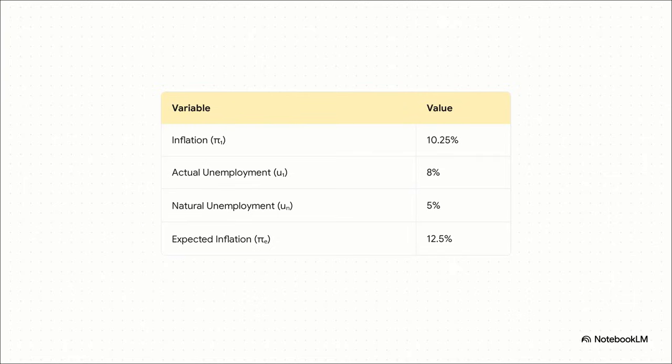Let's start with year one. Here's our setup. We've got inflation sitting at 10.25%, and the actual unemployment rate is 8%. Now economists have this idea of a natural rate of unemployment, sort of the baseline for a healthy economy. And in our case, that's 5%. But here's the kicker, and this is super important. What did people expect inflation to be? A whopping 12.5%. So those are all our starting pieces.